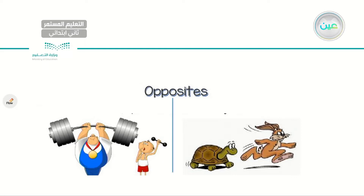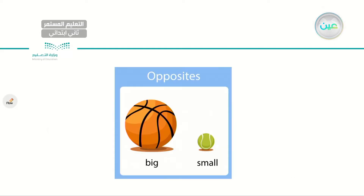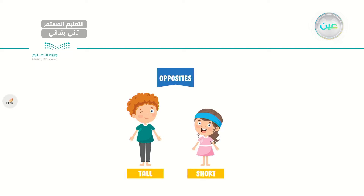Let's talk more about the adjectives from the previous lesson. For example, these two balls: I have a big ball and a small one. The adjectives here are big and small — opposites. Let's have another example: I have a boy and a girl. The boy is tall while the girl is short. Two opposite adjectives.